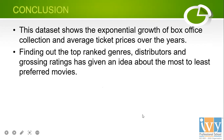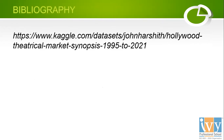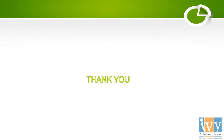I can conclude that this dataset shows the exponential growth of box office collection and average ticket prices over the years. Finding out the top-ranked genres, distributors, and grossing ratings has given an idea about the most to least preferred movies. This is the link to the dataset taken from Kaggle. That's all from my side. Thank you so much.